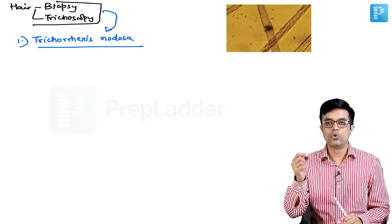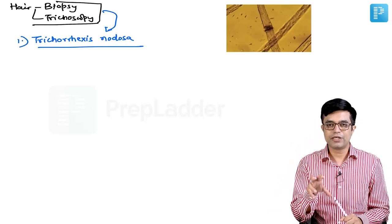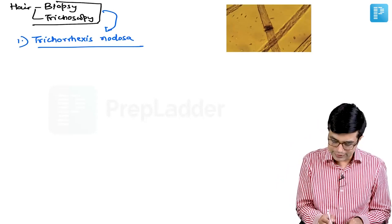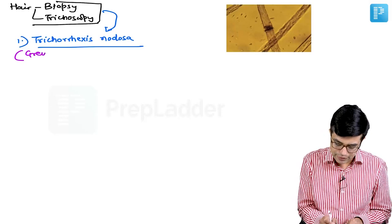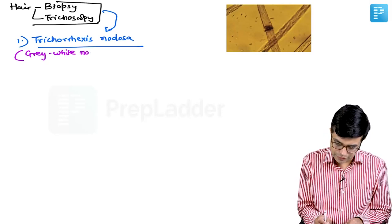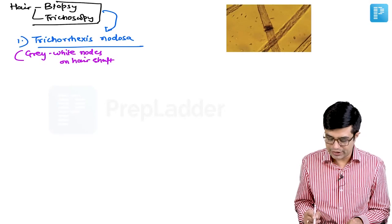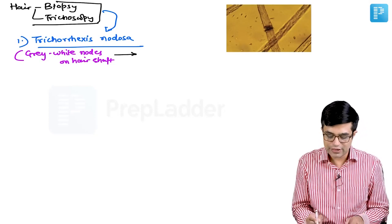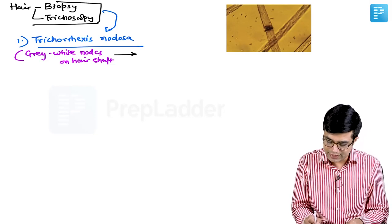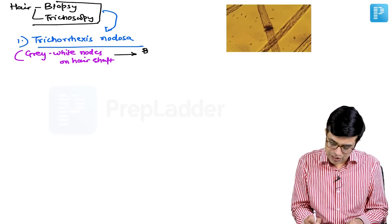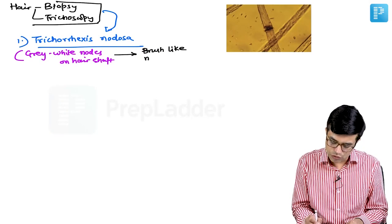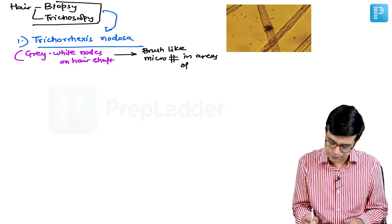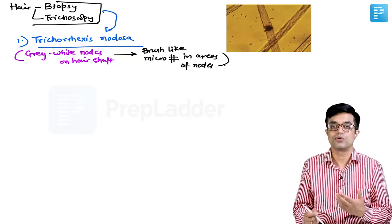Nodosa means nodes. If you look at low magnification or even by naked eye, you will find that there will be gray-white nodes on the hair. Gray-white nodes will be present on the hair shaft and this is the site where these hairs will fracture. On microscopy, you will find that there will be brush-like microfractures in areas of these nodes. That pattern is called trichorexis nodosa.